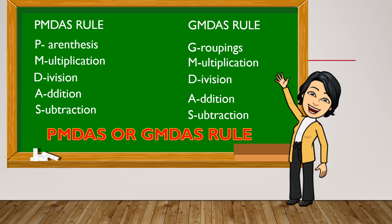We must perform first the operation inside the parentheses, followed by multiplication, and then addition or subtraction as they occur. Same with GEMDAS: do the groupings first, followed by multiplication or division, and then addition or subtraction as they occur.